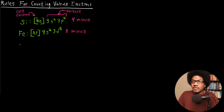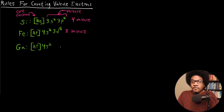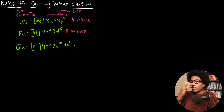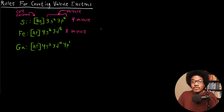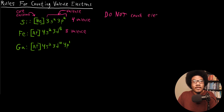Let's go to another example — gallium. Gallium has the following electron configuration: argon as our noble gas, 4s2, 3d10, 4p1. Going off of the rules we have established so far, you might say that gallium has 13 valence electrons — the 2 in the 4s, the 10 in the 3d, and the 1 in the 4p. However, there is an additional rule I want to introduce: when counting valence electrons, we do not count electrons that are in filled D or F subshells.